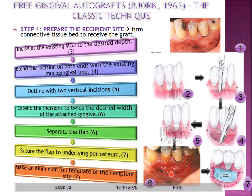Following that, separate the flap and suture it to the underlying periosteum so that it does not overlap. Then make a tin foil template of the recipient site — this will be used in the next step to determine how much graft material is required.